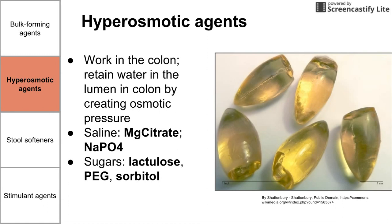PEG — polyethylene glycol — is a polymer used in many drugs; it is insoluble. Sorbitol is a sugar used as an artificial sweetener in some candies. Both act as hyperosmotic agents that cause you to need to use the restroom. There are also alcohols, with glycerin as an example of a hyperosmotic agent.